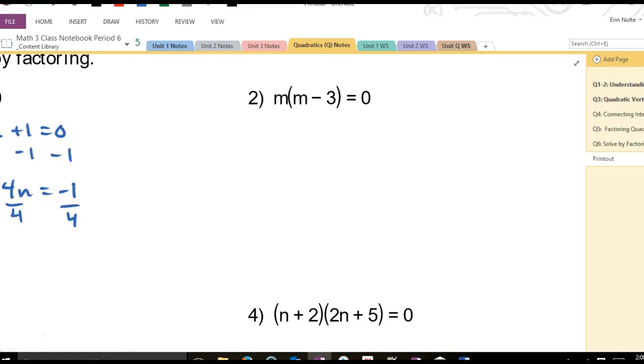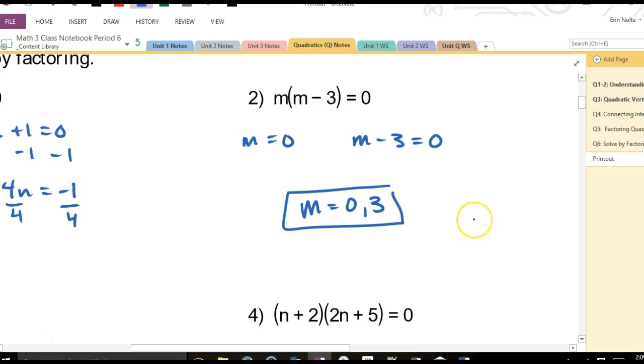Let's try the next one. Number 2. Again, what do I do with my two quantities? Good. I set them equal to 0. So, one quantity is m. m equals 0. That's a pretty easy equation to solve. The other one's not much harder. What are my two solutions? 0 and positive 3. Everybody do that in their heads?